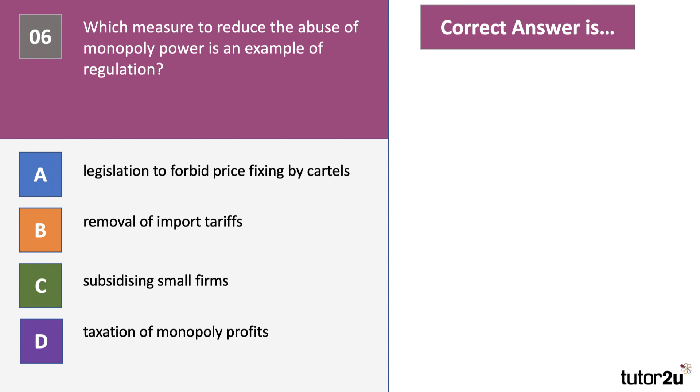And our final question in this little set of six multiple choice questions on monopoly. Which measure to reduce the abuse of monopoly power is an example of regulation? Is it legislation to forbid price fixing by cartels? Is it the removal of import tariffs? Is it the subsidizing of smaller firms in the market? Is it the taxation of monopoly profits? Have a go please at question 6.